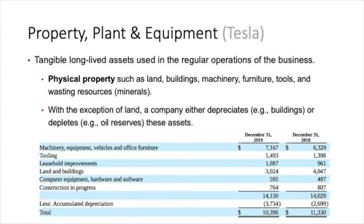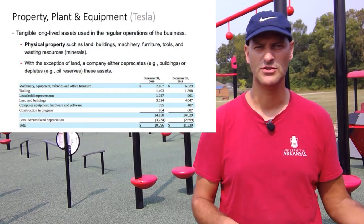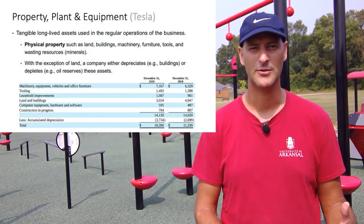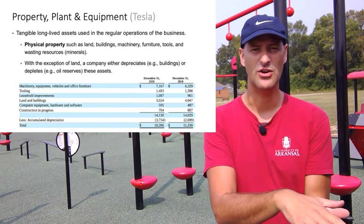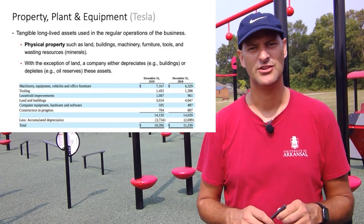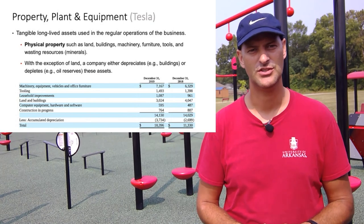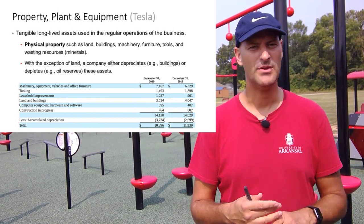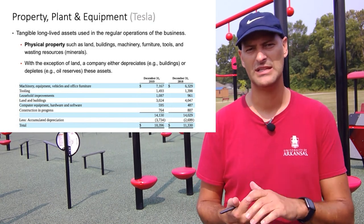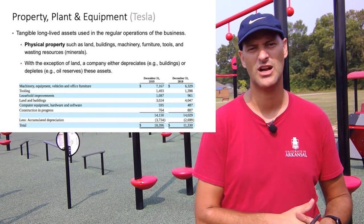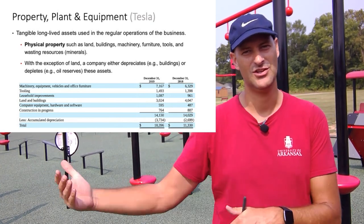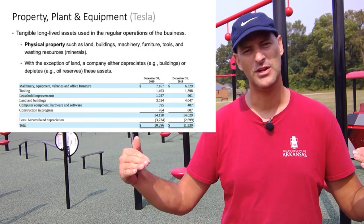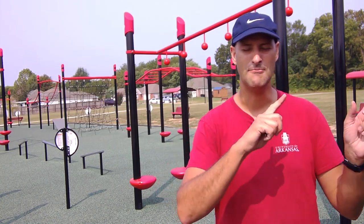Next, property, plant, and equipment: physical, tangible, long-lived assets used in the regular operations of the business — land, buildings, machinery, furniture, tools. This gets depreciated, so the company must disclose accumulated depreciation, which reduces the historical cost of purchased items. With the exception of land, items are either depreciated (buildings, equipment) or depleted if they're natural resources. Looking at Tesla's property, plant, and equipment, they list machinery, equipment, vehicles, office furniture, tooling, leasehold improvements, land and buildings, computer equipment, and construction in progress — which has not yet started depreciating since it hasn't been placed in service. They then show accumulated depreciation to arrive at net property, plant, and equipment on the balance sheet.